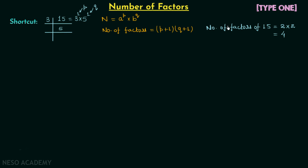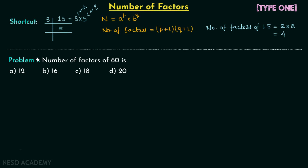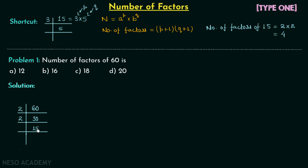Now we move on to Problem 1: find the number of factors of 60. The given number is 60. Dividing by 2 gives 30; again by 2 gives 15; 15 is divisible by 3 giving 5; and 5 is a prime number so we stop. Therefore 60 = 2^2 × 3^1 × 5^1.